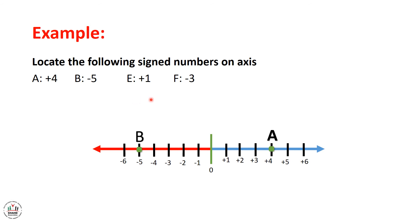For E, we should only move by one number to the right of 0, because it's equal to plus 1.